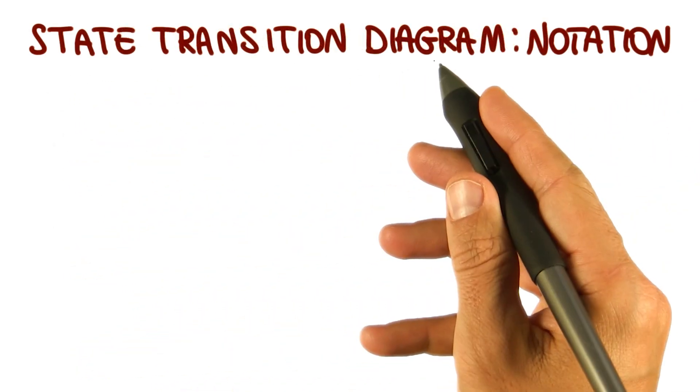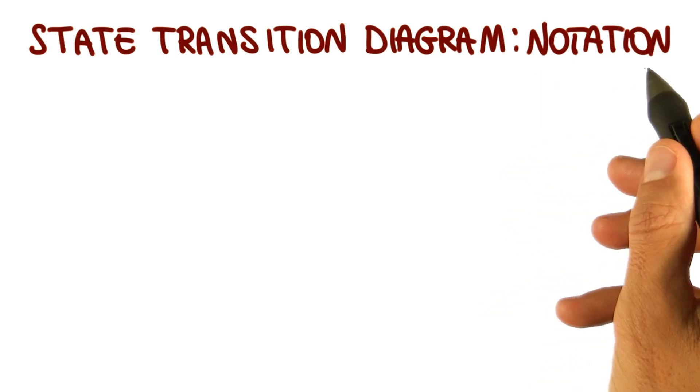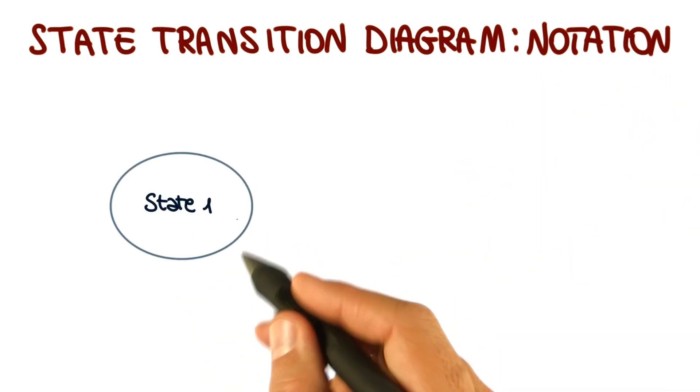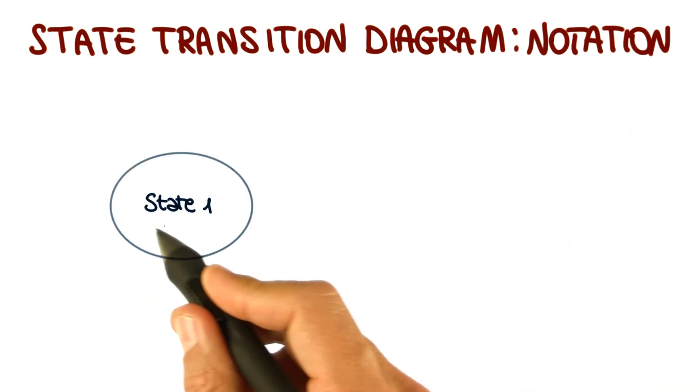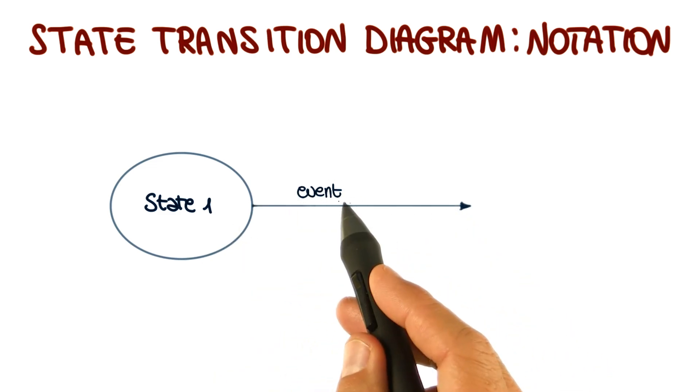Let me discuss the transition diagram in more detail and also provide information about the notation used to represent them. We have states that are represented by ovals with the name, and we have transitions marked by the event that triggers the transition.